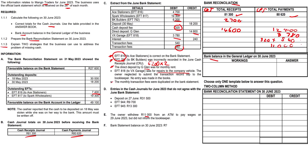We haven't dealt with interest received yet, so we plug in the R240 as well. We've also dealt with the R3,780 - just didn't make a cross. It's important to mark off what you're working with so you don't deal with the same figure twice.